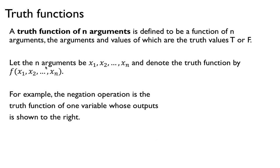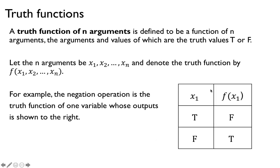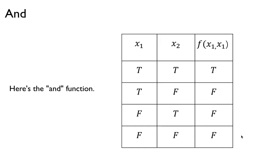For example, the negation operation is a function that takes one input x1, and is simply negated. So true becomes false, false becomes true. The function output is this last column. It's just a truth function — a function that can only take Boolean variables and whose output is also true or false. And here's the AND function — it takes two inputs and just ANDs the inputs, so the last column is the output of that.